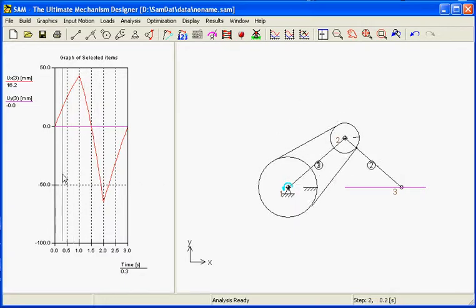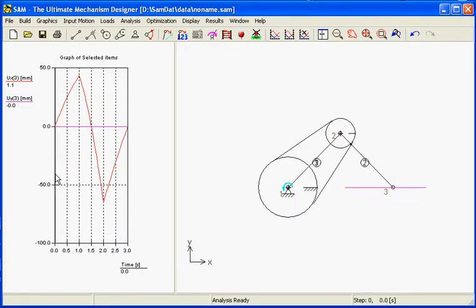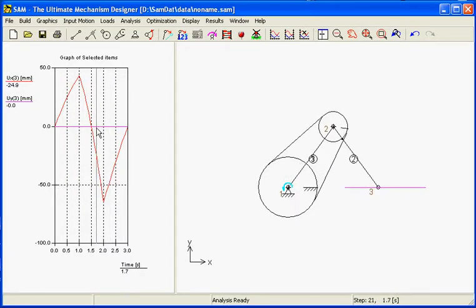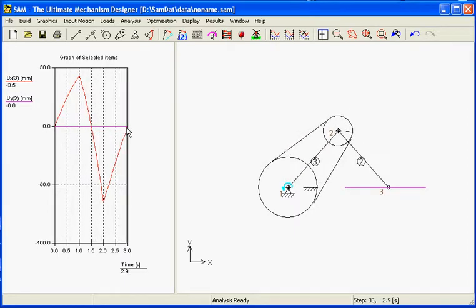The point of node 3 will follow an exact straight line, as you can see on the values in the graph.